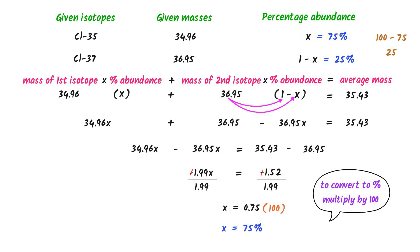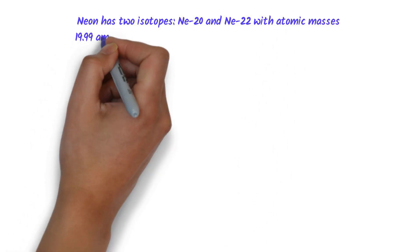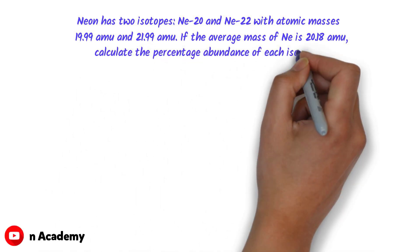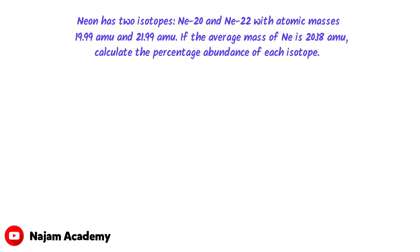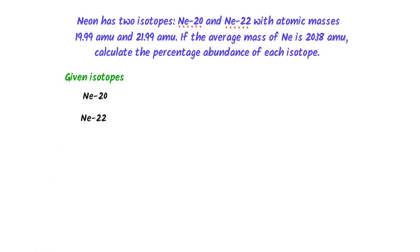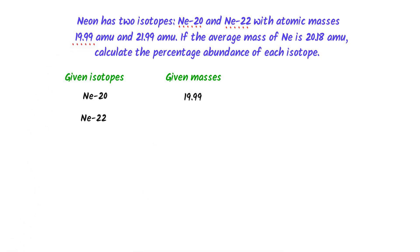Let me teach you one more numerical problem. Neon has two isotopes, Neon-20 and Neon-22, with atomic masses of 19.99 amu and 21.99 amu. If the average mass of Neon is 20.18 amu, calculate the percentage abundance of each isotope. As usual, I write the given isotopes — Neon-20 and Neon-22 — and their given masses: 19.99 amu and 21.99 amu respectively. We are asked to find the percentage abundance of each isotope.